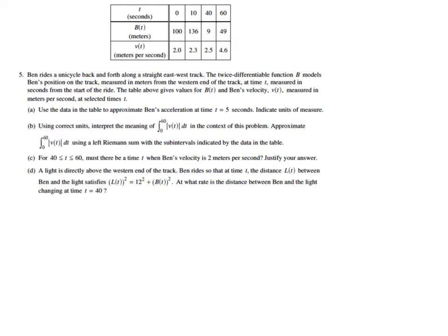So we want the acceleration at time t equals 5. Well, we don't have any information about what's happening at time t equals 5, but we do know what happens between 0 and 10. And since 5 is on that interval between 0 and 10, we look at the velocity between 0 and 10, and we look at how that changes, because that's what acceleration is. It's a rate of change of velocity.